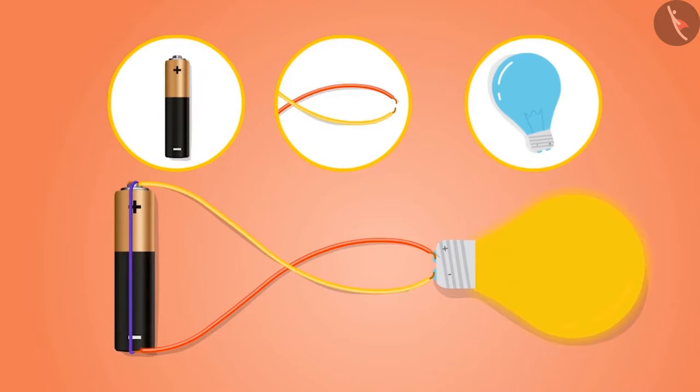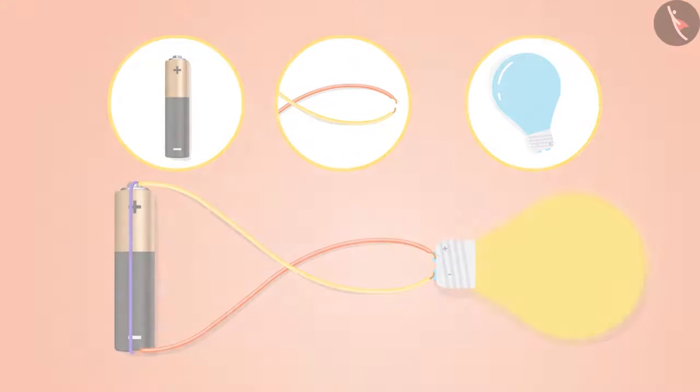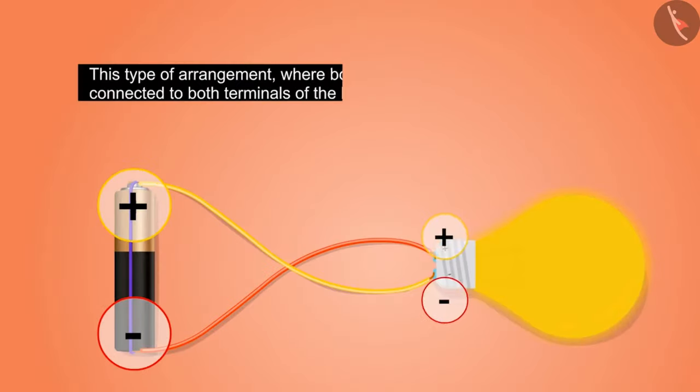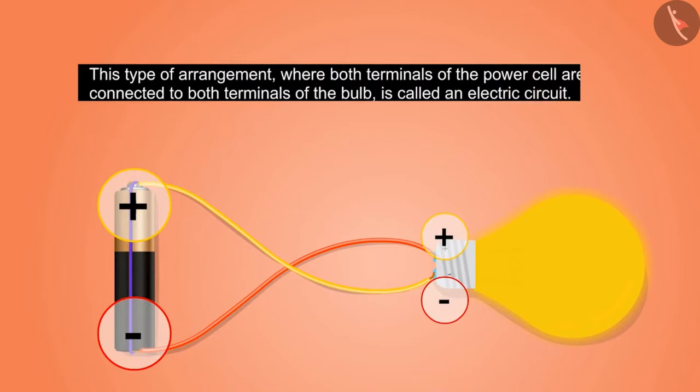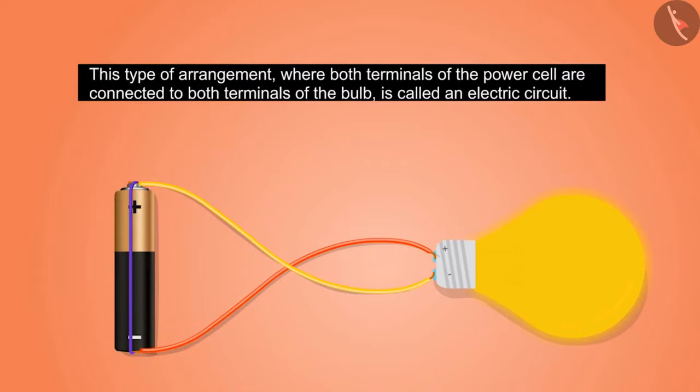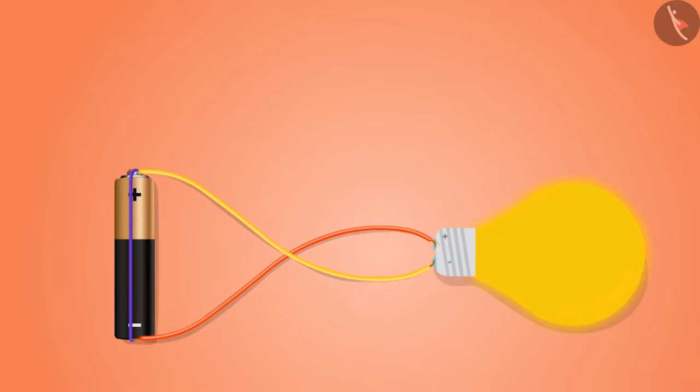'This type of arrangement where both terminals of the power cell are connected to both terminals of the bulb is called an electric circuit. The bulb could only be turned on when an electric current flows through the electric circuit you created.'